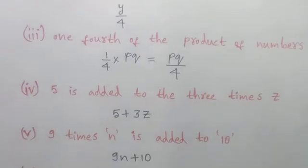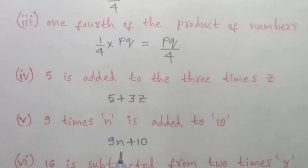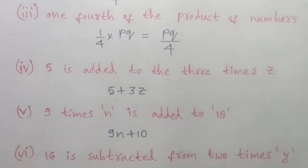Coming to the fifth one: 9 times N is added to 10. So 9 into N plus 10 is the algebraic expression for the given sentence.